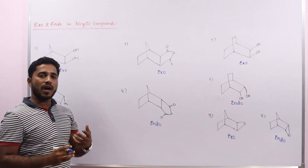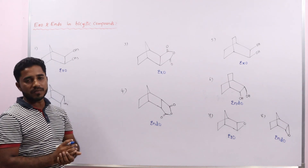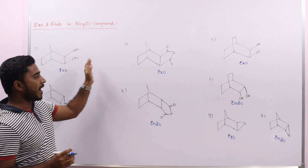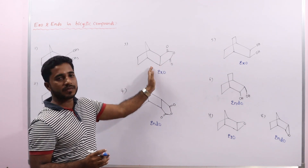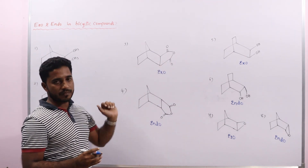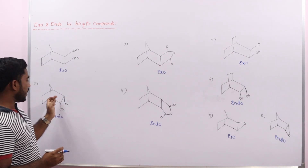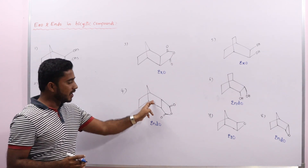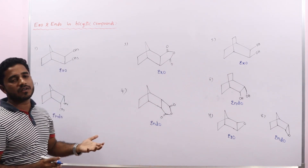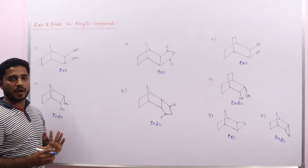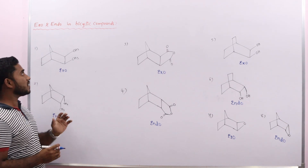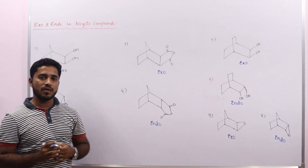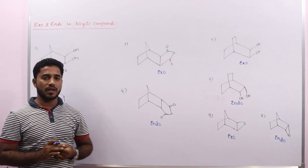To summarize: when ring and groups, or ring and another ring, are on the same side, that is called exo. When ring and groups, or ring and another ring, are on opposite sides, that is called endo. This is about the exo and endo forms in bicyclic compounds. Thank you.